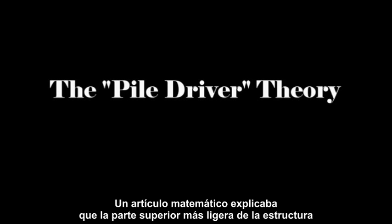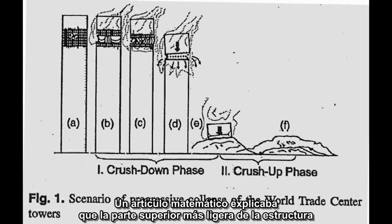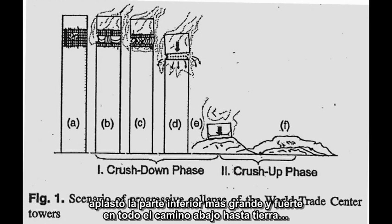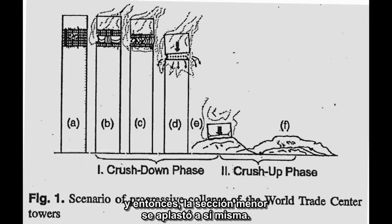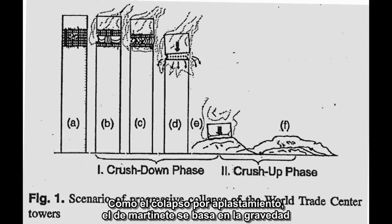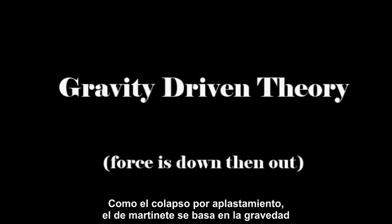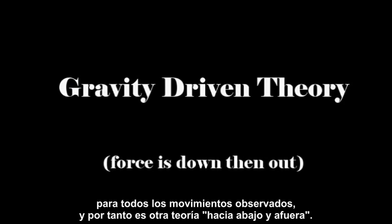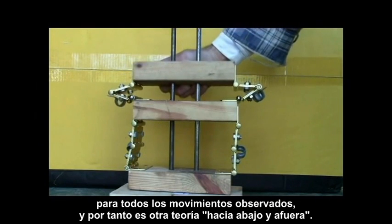A mathematical paper explained that the upper lighter part of the structure crushed the larger, stronger, lower part all the way down to the ground, and then the smaller section crushed itself back up. Like the pancake theory, the pile driver theory relies on gravity for all the motions observed, and hence is another down-and-out theory.